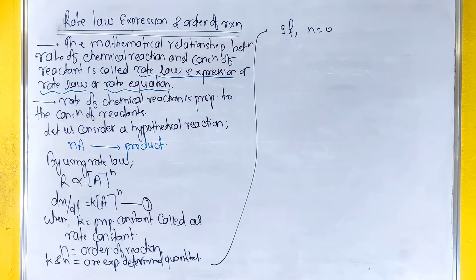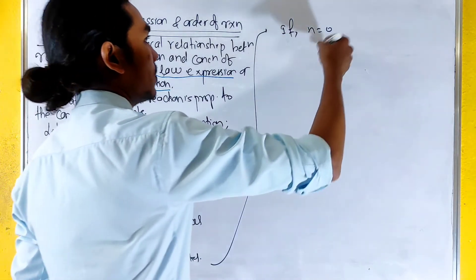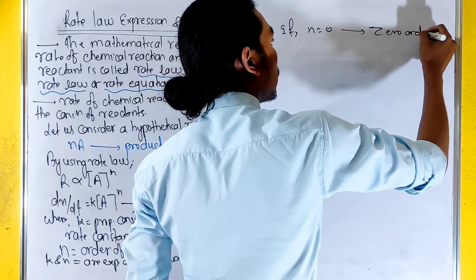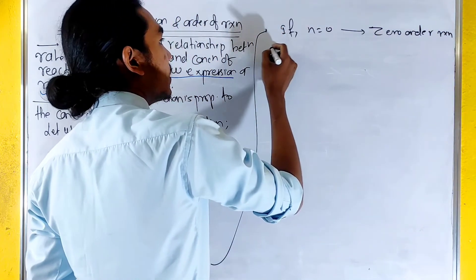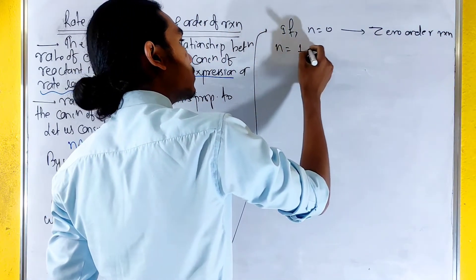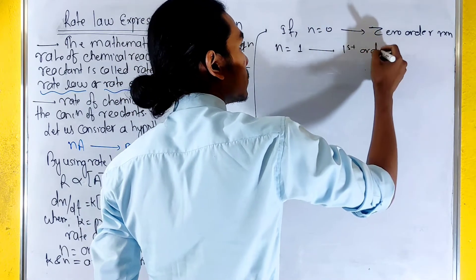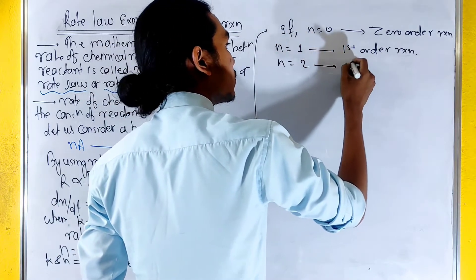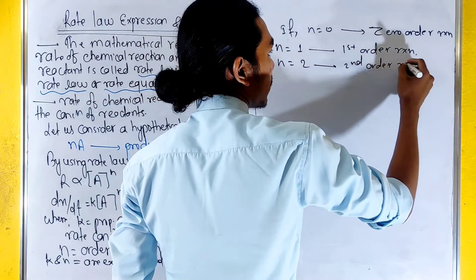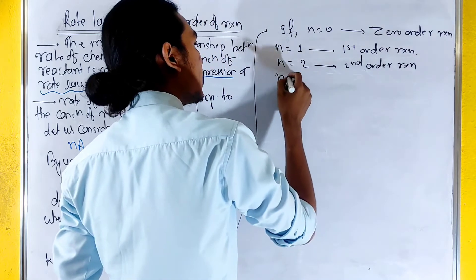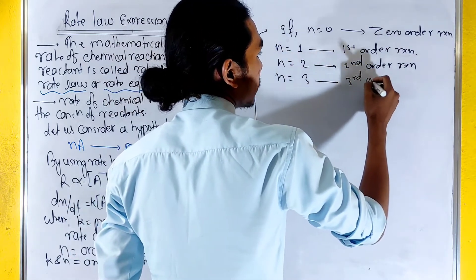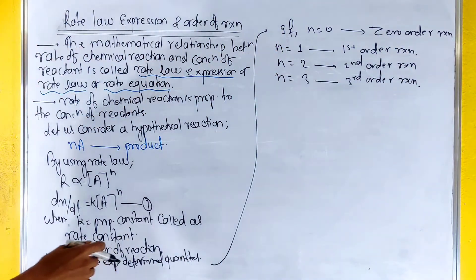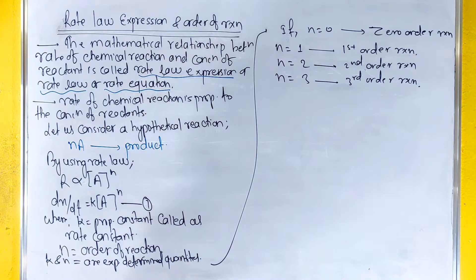When n is equal to 0, that is zero order reaction. When n equals 1, this is first order reaction. When n equals 2, this is second order reaction. When n equals 3, this is third order reaction.